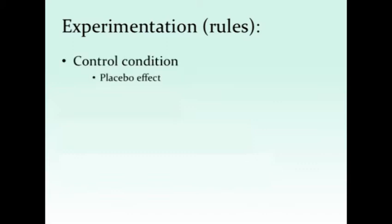There are rules to experimentation, however. You can't simply go around giving people money, seeing that they become happy, and saying that money causes happiness. One of the first rules is that you need a control condition. If you gave someone money and they became happier, but what if you gave them a book or play money and they also became happier? Then we don't know if it's the money itself making people happy. The placebo effect is very real, and we know that if you do anything to people as a psychologist they will respond in some way. So you want to check that it's specifically what you're giving them — not just the interaction — that's having the effect.